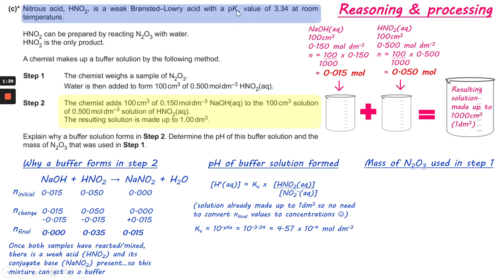Now the pKa value is not the same as the Ka value. You need to do 10 to the minus pKa. So 10 to the minus 3.34 gives you 4.57 times 10 to the minus 4. And you put that into the Ka part of the expression.